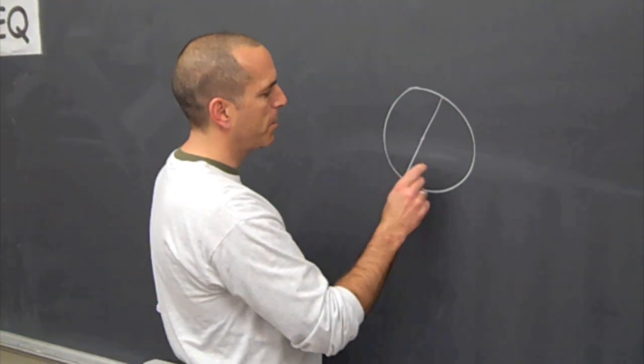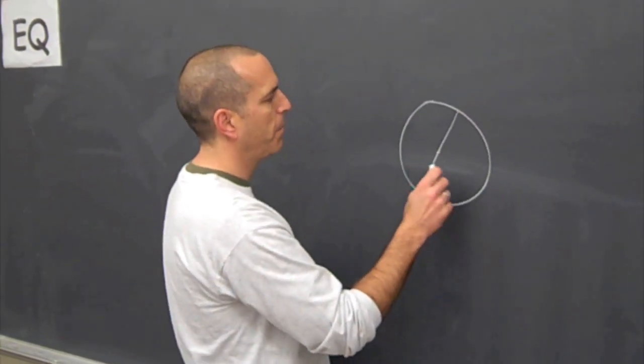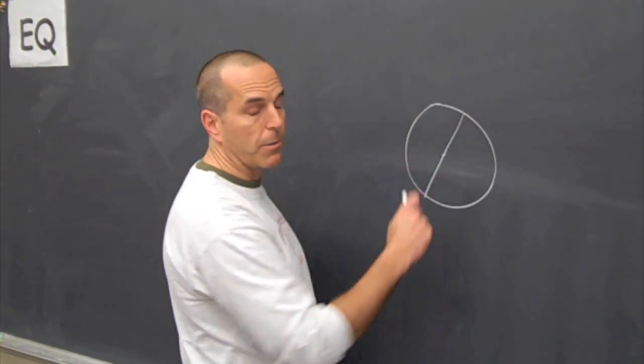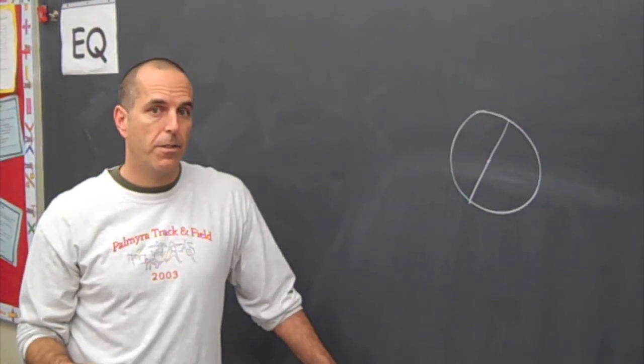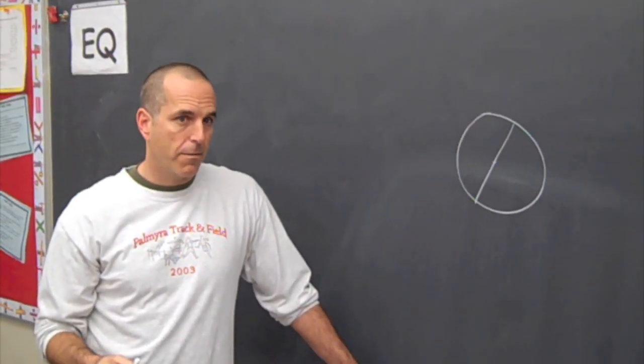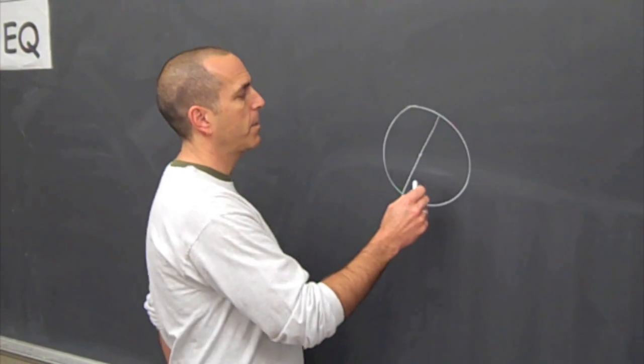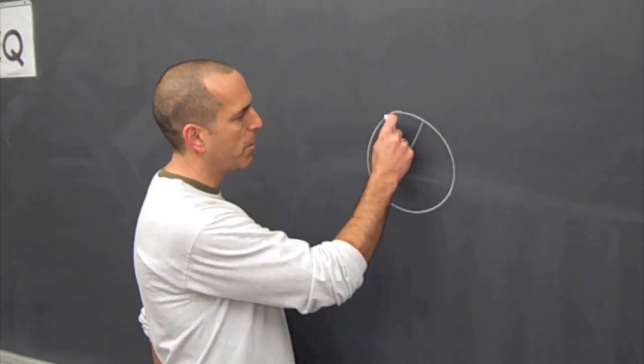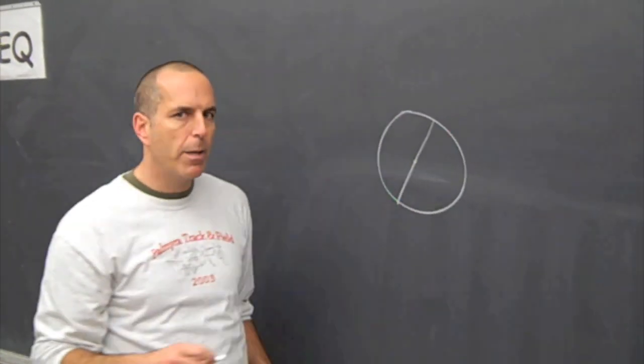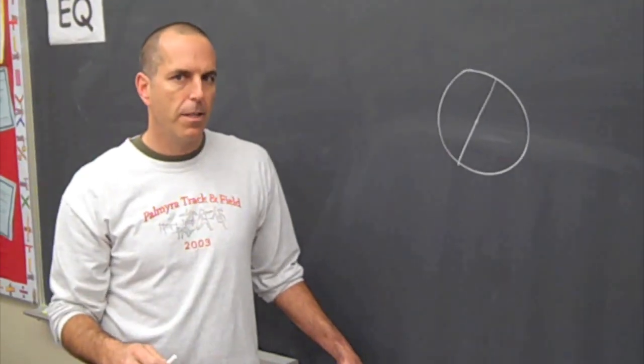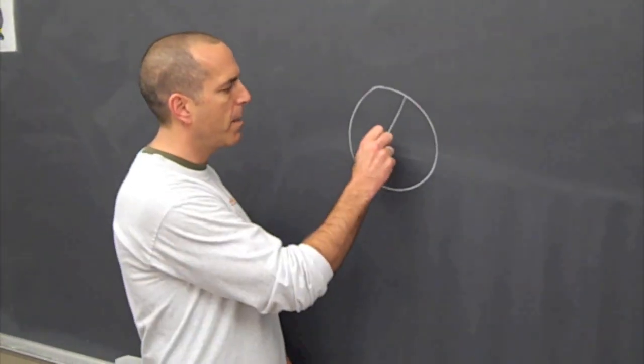If you had a circle like this, a line that is drawn through the center of the circle is known as the diameter. The distance around the outside of a circle is known as the circumference. And what Archimedes discovered is that the distance around the outside of a circle is exactly 3.14 times longer than its diameter.